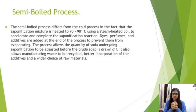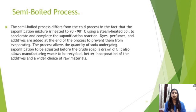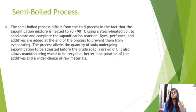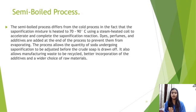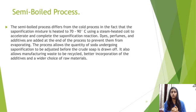The semi-boiled process differs from the cold process in that the saponification mixture is heated to 70–90 degrees Celsius using a steam-heated coil to accelerate and complete the saponification reaction. Some heat is required for manufacturing. Dyes, perfumes, and additives are added at the end of the process to prevent them from evaporating. The process allows the quantity of soda undergoing saponification to be adjusted before the crude soap is drawn off, allows manufacturing waste to be recycled, better incorporation of additives, and a wider choice of raw materials.